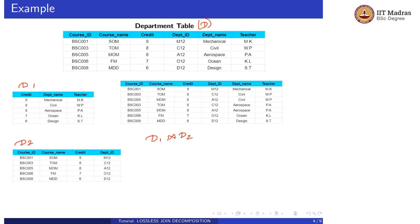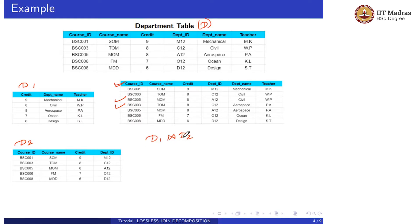Here we get two new tuples: BSC005 MOM 8 A12 Civil WP and BSC003 TOM 8 C12 Aerospace EA. These two tuples are not present in our original table. So we can say D1 natural join D2 is not equal to D, and therefore our decomposition is lossy decomposition.